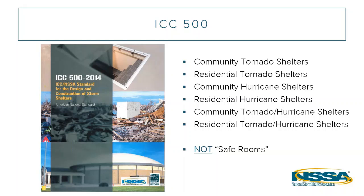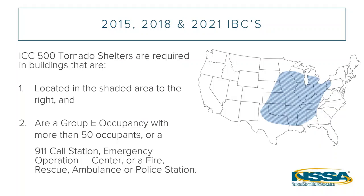ICC 500 is a minimum standard. If you're going to call something any one of the terms listed here at the top, then you need to comply with ICC 500 as its building code. The 2015 was the first version of the IBC to require that you build tornado shelters in certain buildings. For this blue shaded region of the country, which affects about 23 states, you have to build a tornado shelter if you are part of an educational occupancy with 50 or more people, or if you are part of a first response emergency response facility.